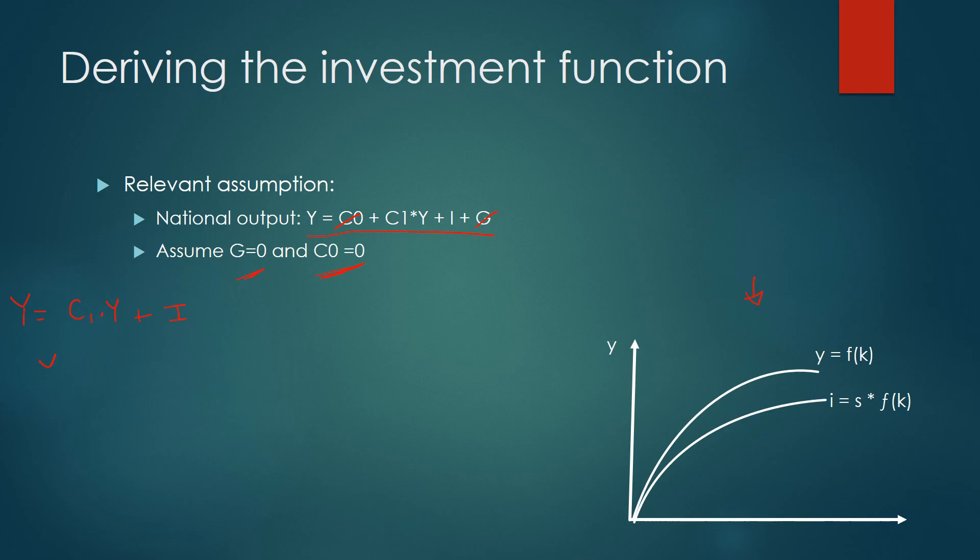Rearranging this equation, we can therefore find that Y multiplied by 1 minus C1 is equal to investment. Now, C1 is the amount of consumption you consume for every extra pound you're given. So 1 minus C1 would be how much money you save for every pound that you're given. So actually, we can rewrite this as Y multiplied by the savings rate is equal to investment.